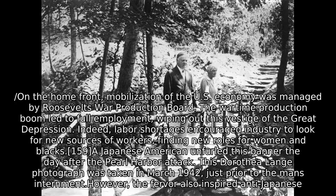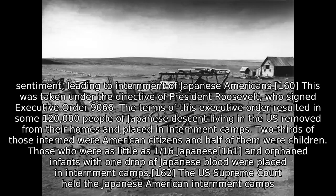Labor shortages encouraged industry to look for new sources of workers, finding new roles for women and blacks. However, the fervor also inspired anti-Japanese sentiment, leading to the internment of Japanese Americans. This was taken under the directive of President Roosevelt, who signed Executive Order 9066. The terms of this Executive Order resulted in some 120,000 people of Japanese descent living in the U.S. being removed from their homes and placed in internment camps. Two-thirds of those interned were American citizens and half of them were children. Those who were as little as 1/16 Japanese, and orphaned infants with one drop of Japanese blood, were placed in internment camps.